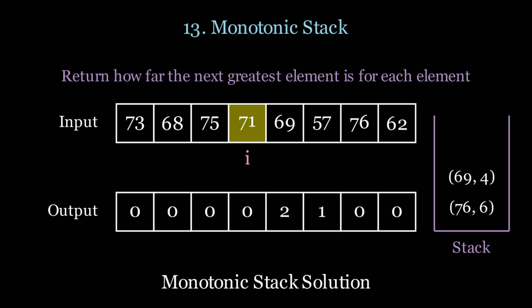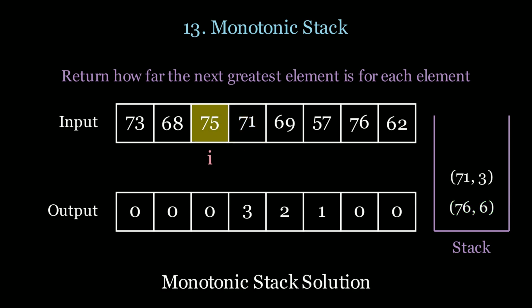71 is greater than 69 so we pop it off; 76 is greater than 71 so we add it to our result, then add 71 to the stack. We go to 75 — 71 is smaller than 75 so we pop it; 76 is greater than 75 so we use it, and we add 75 to the stack.